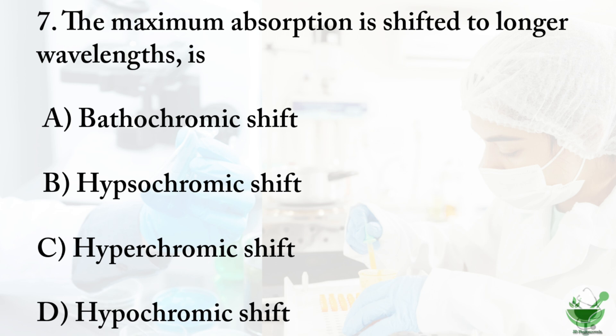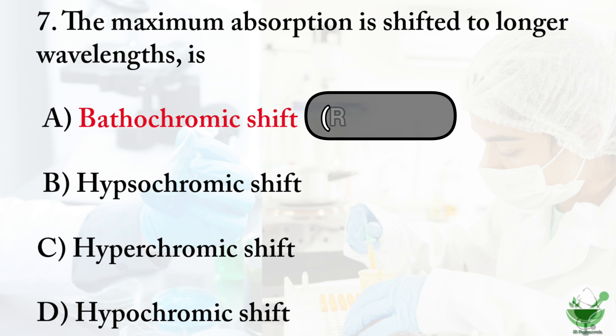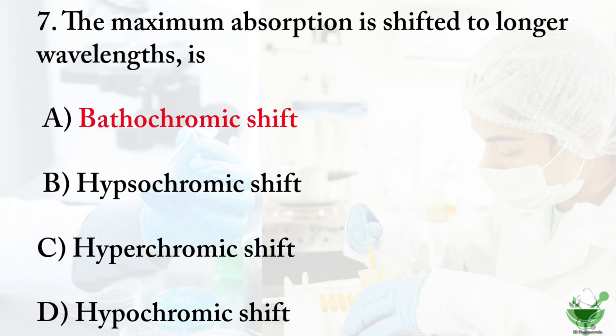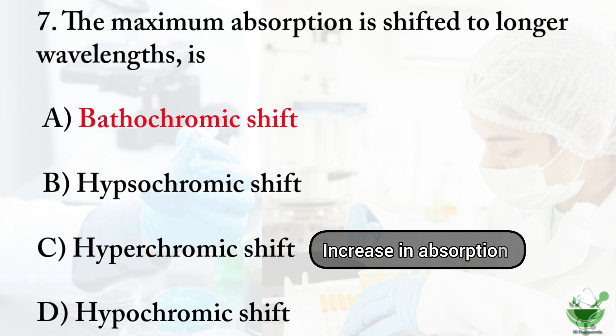Question number seven: maximum absorption shifted to longer wavelengths is — option A: bathochromic shift, option B: hypsochromic shift, option C: hyperchromic shift, option D: hypochromic shift. The correct option is A, bathochromic shift. In spectroscopy, bathochromic shift is the position shift of a peak or signal to a longer wavelength, also called red shift. Hypsochromic shift is the shift to a shorter wavelength, also known as blue shift. Hyperchromic shift refers to an increase in absorption of light.